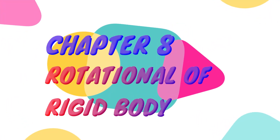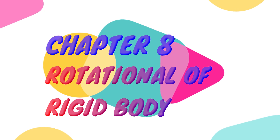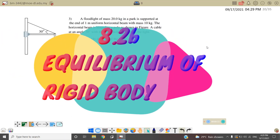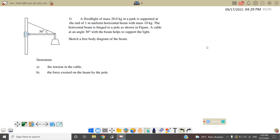Hello, welcome back to my channel. Today we will continue with chapter 8, the topic of rigid body. In this video we will continue with question number 3: a third line of mass 20 kg in the park is separated by the end of a 1-meter uniform horizontal beam with mass 10 kg. This beam is 1 meter, meaning our weight of the beam is 10 kg.